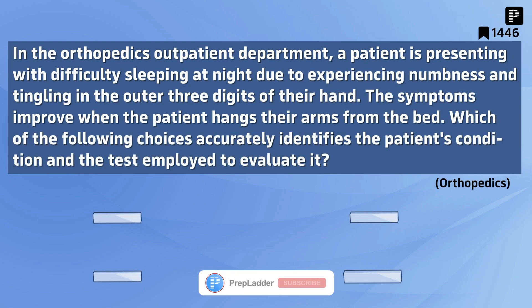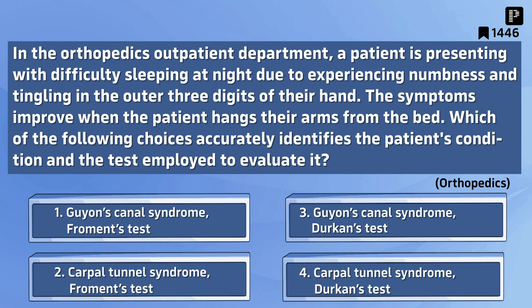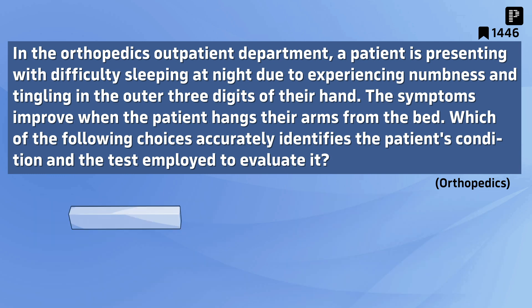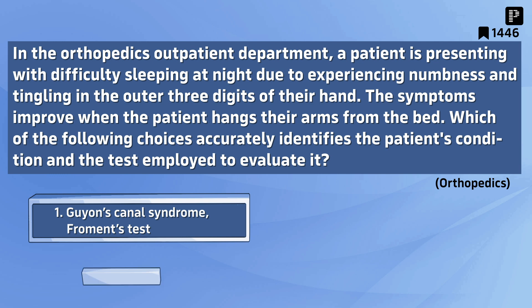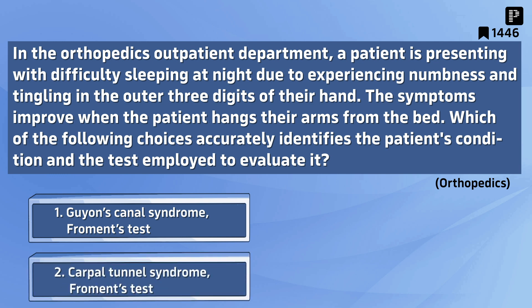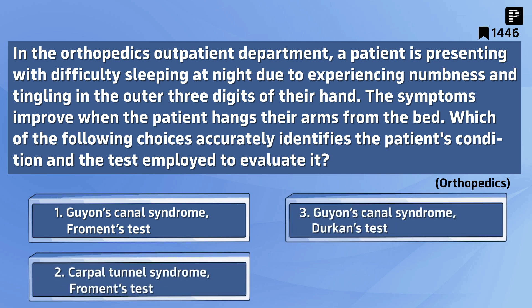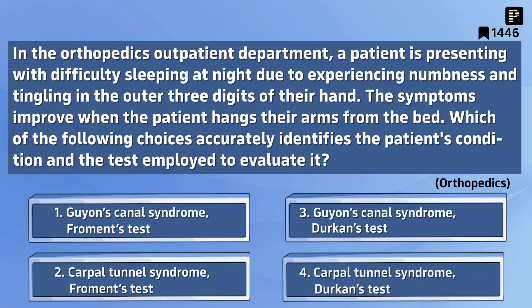Question 5: In the orthopedics outpatient department, a patient is presenting with difficulty sleeping at night due to experiencing numbness and tingling in the outer three digits of their hand. The symptoms improve when the patient hangs their arms from the bed. Which of the following choices accurately identifies the patient's condition and the test employed to evaluate it? Options: Guyon's Canal Syndrome / Froment's Test; Carpal Tunnel Syndrome / Froment's Test; Guyon's Canal Syndrome / Durkan's Test; Carpal Tunnel Syndrome / Durkan's Test. The correct answer is Carpal Tunnel Syndrome, Durkan's Test.